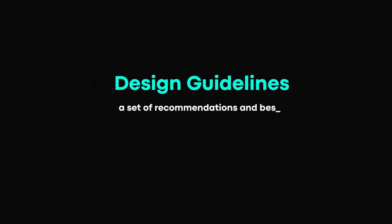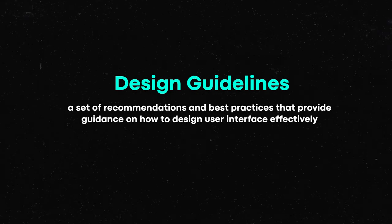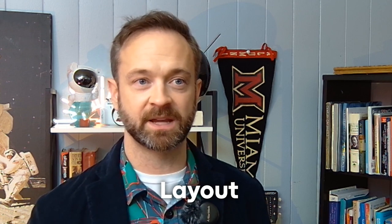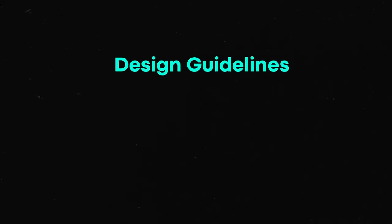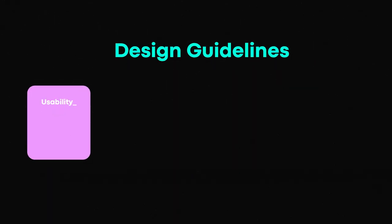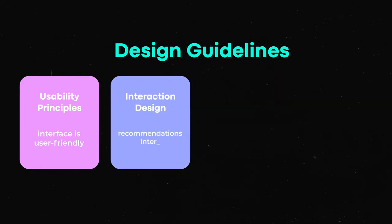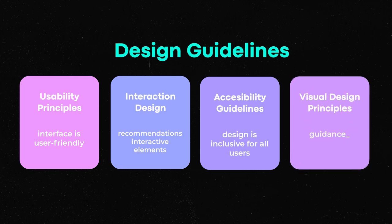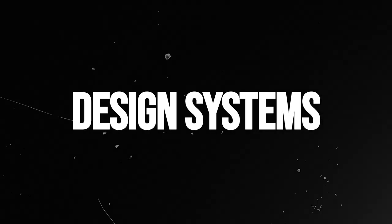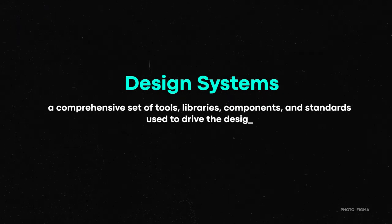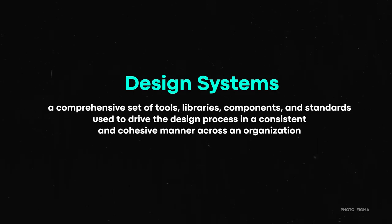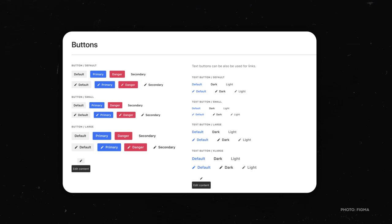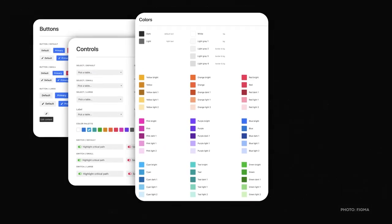Design guidelines are recommendations and best practices for designing user interfaces effectively, focusing on enhancing usability and the overall user experience by ensuring the UI is intuitive, accessible, and consistent. They cover layout, navigation, color, typography, and interactive design. Design guidelines have four components: usability principles, interaction design recommendations, accessibility guidelines, and visual design principles. Design systems are a comprehensive set of tools, libraries, components, and standards used to drive the design process consistently across an organization, coming from reusable UI components, code libraries, and established design solutions.